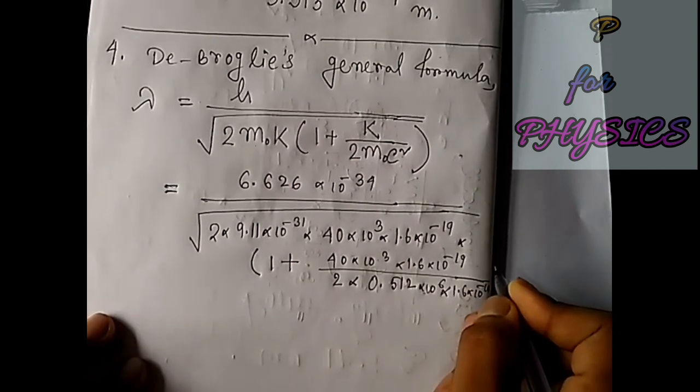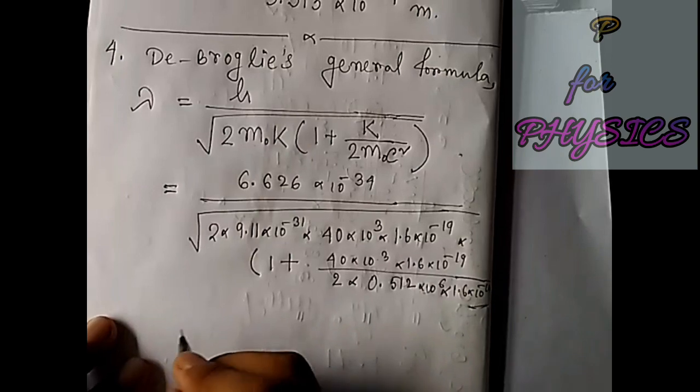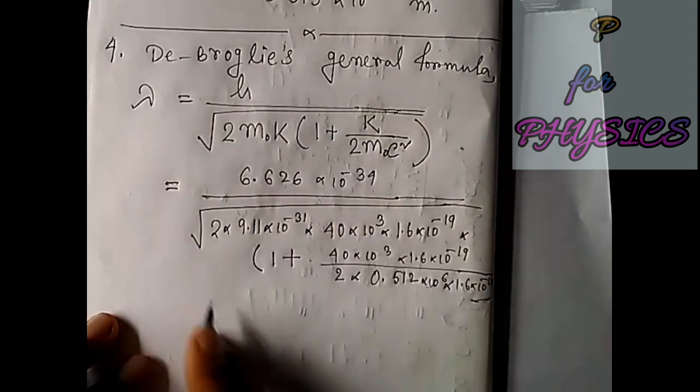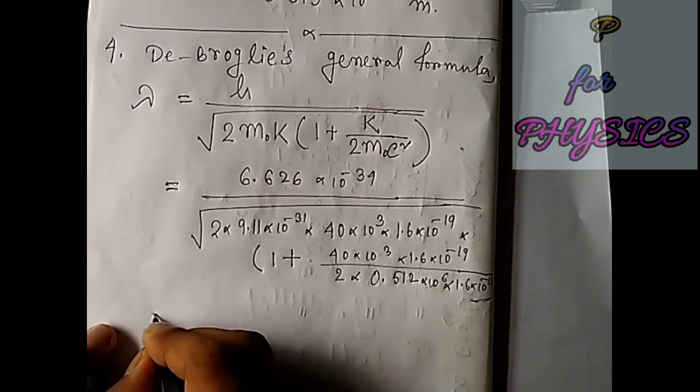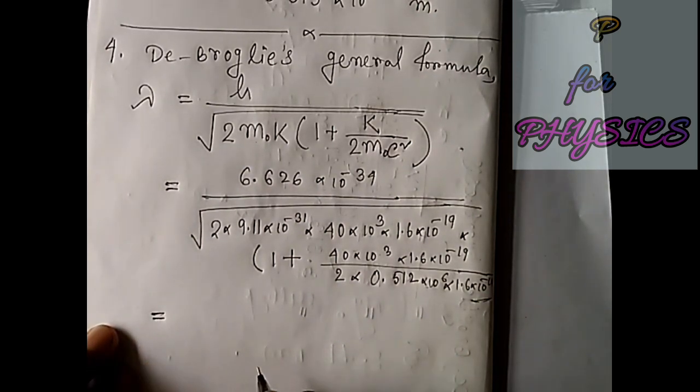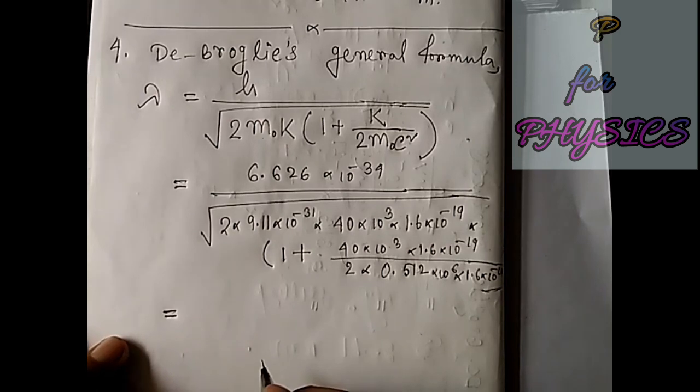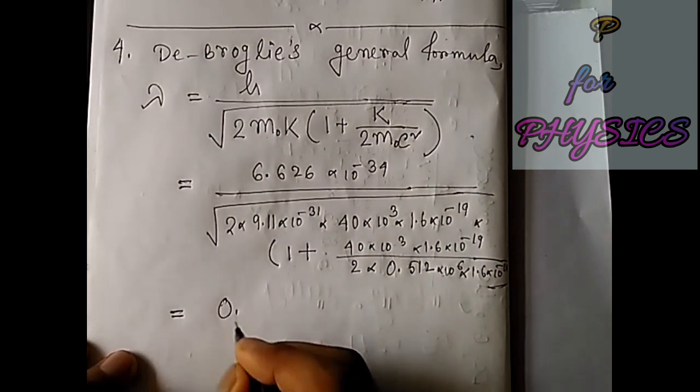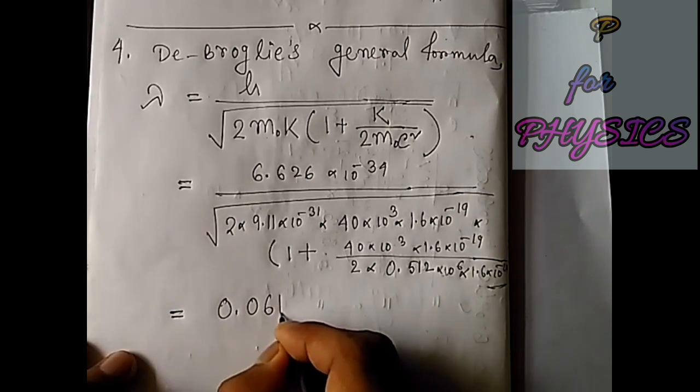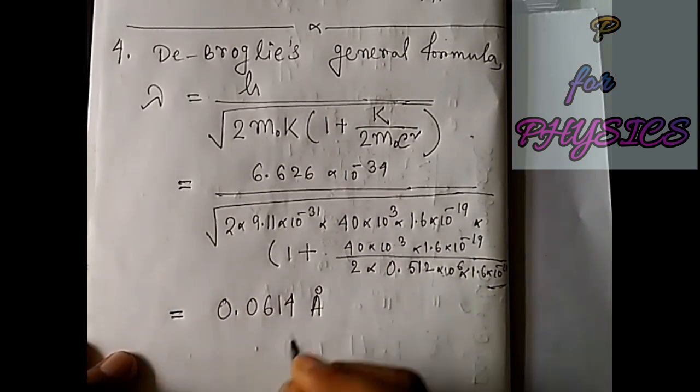And if we calculate this value, we will have the value of lambda. I did this calculation before, and it will be something like 0.0614 angstrom. So that is the solution of this problem.